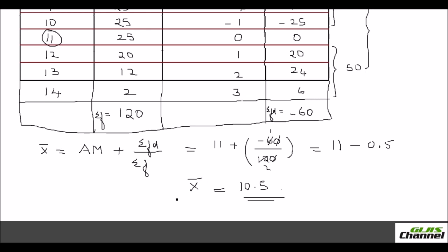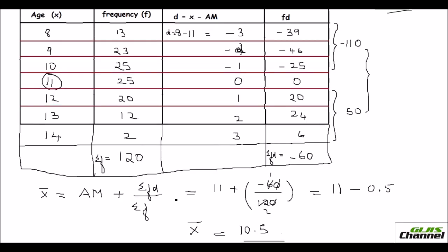So we got the arithmetic mean as 10.5 in this case. This is as simple as the direct method. In the direct method you deal with larger numbers, but in the deviation method the values are much smaller, so addition, subtraction, and multiplication are all easier. That is why we use the assumed mean method, also called the deviation or indirect method.